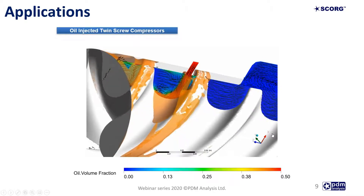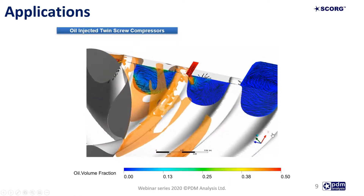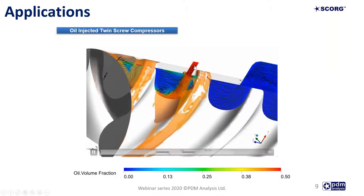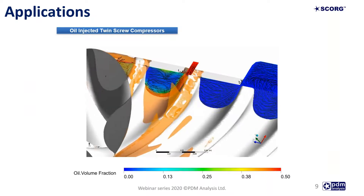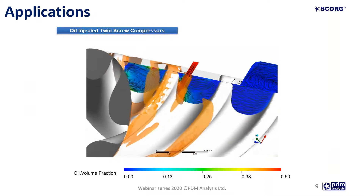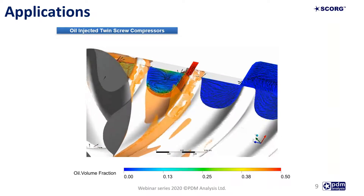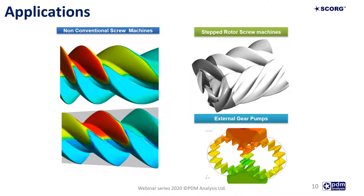Advanced examples include oil-injected compressors where oil is treated as a secondary phase and the compression gas as the primary phase, solved using a two-phase Euler-Euler approach in the ANSYS CFX solver. Non-conventional rotors such as variable lead type — with larger lead on the suction end and lower lead on the discharge end — or conical rotors can also be computed using SCORG grid generators even though these designs are not yet available in manufacturing. Dual lead rotors and external gear pump examples can similarly be solved.